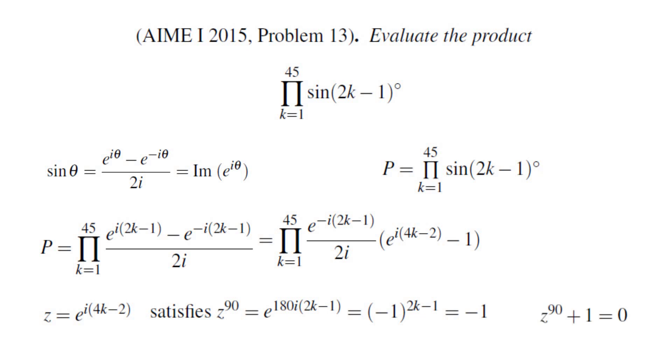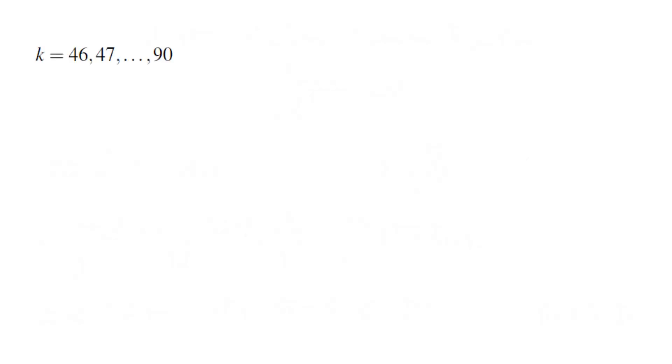These are not enough for us to factor z^90 + 1. We need 90 different complex numbers in order to factor z^90 + 1. So how do we find the rest of these?